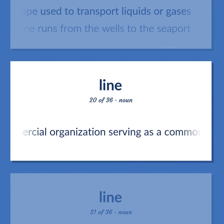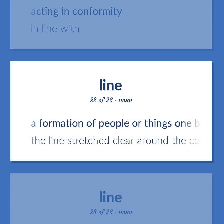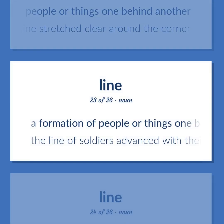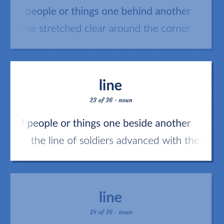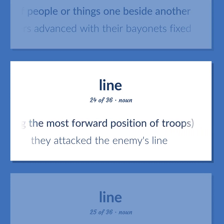A commercial organization serving as a common carrier. Acting in conformity; in line with. A formation of people or things one behind another. The line stretched clear around the corner. A formation of people or things one beside another. The line of soldiers advanced with their bayonets fixed. A fortified position, especially one marking the most forward position of troops. They attacked the enemy's line.